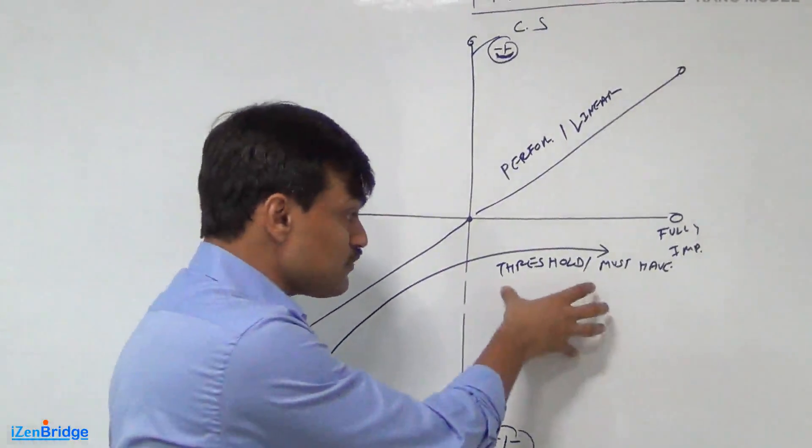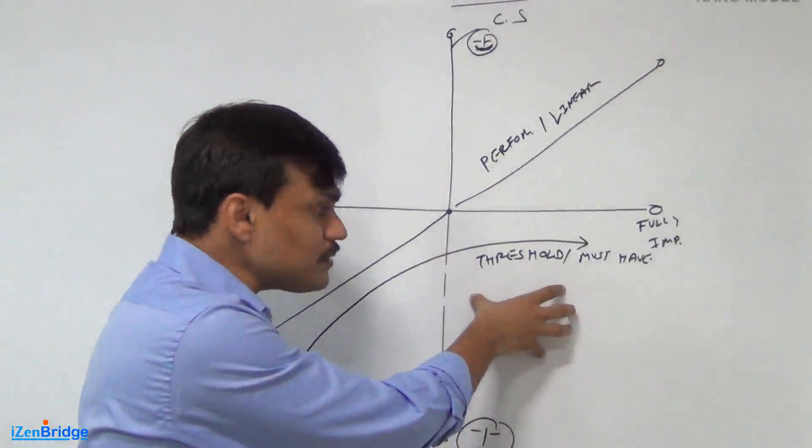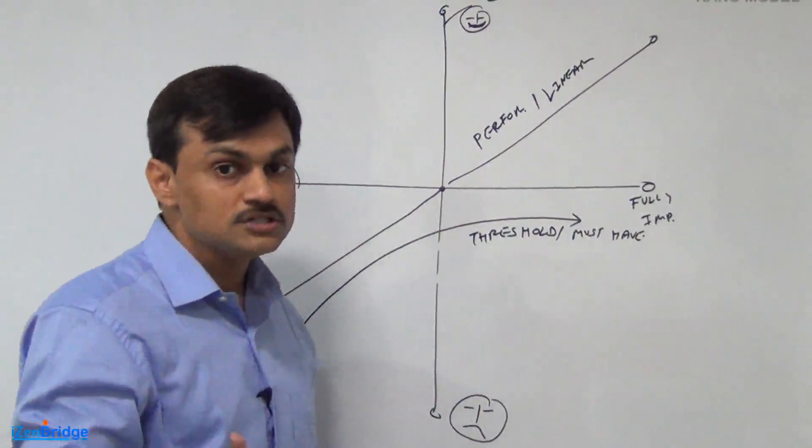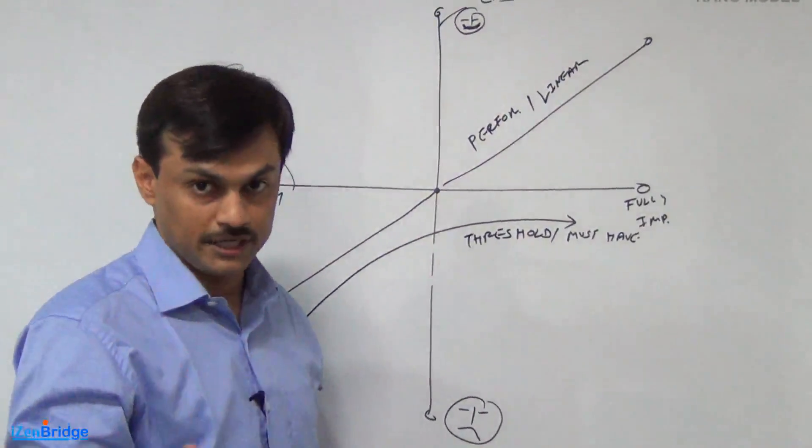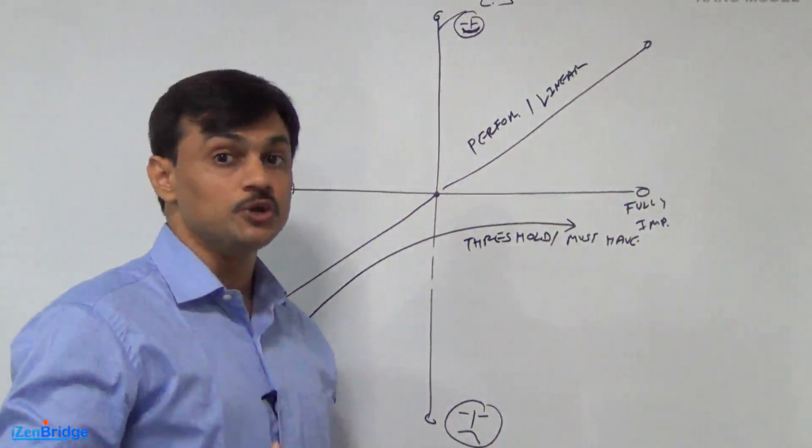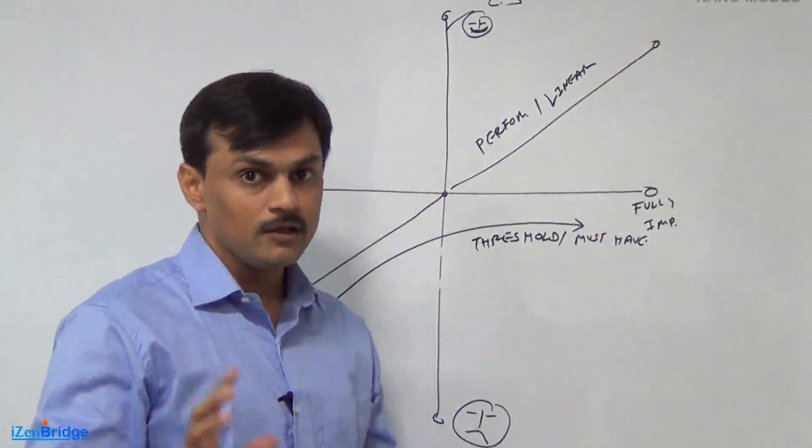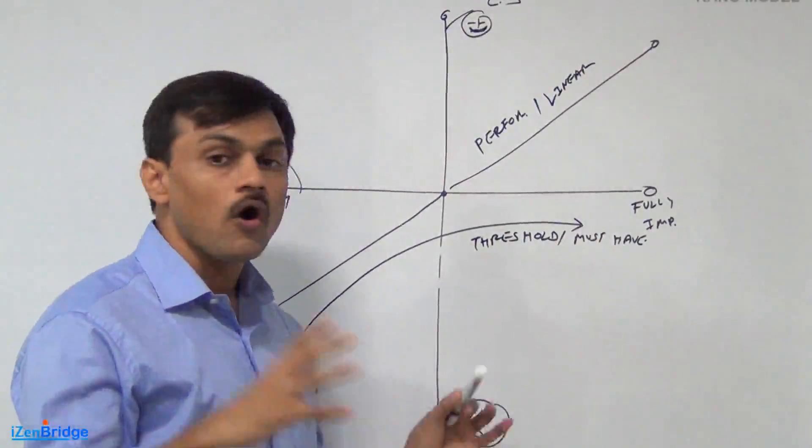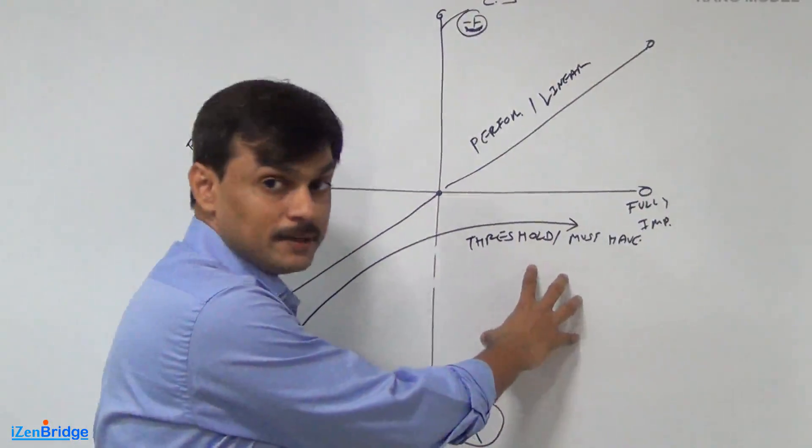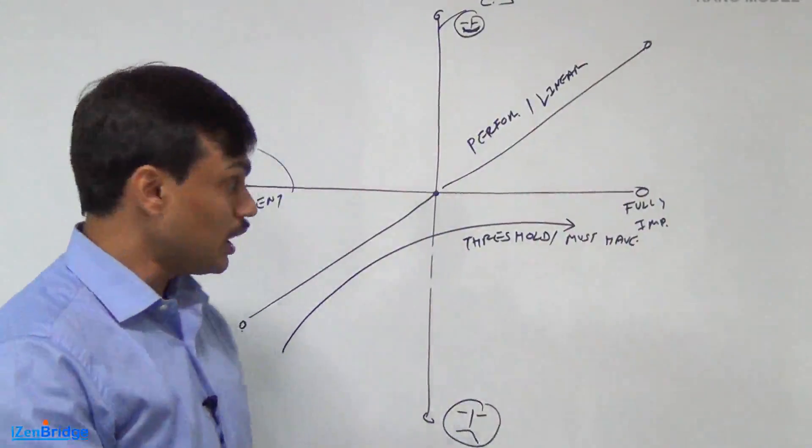As a business analyst, this is a very challenging type of set because customer may not think about them. Customer may not even talk about them because they take them as a granted. But you need to know them well. Especially when you are getting into a new domain where you don't understand that area well, you need to investigate which all comes under threshold category. Because if you don't implement them, customer would just will not visit our website again.